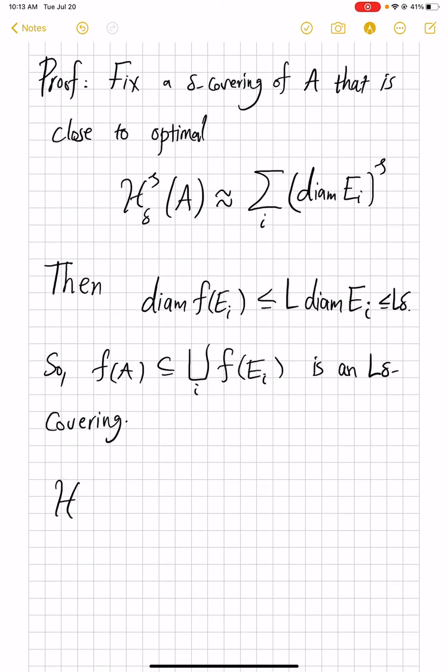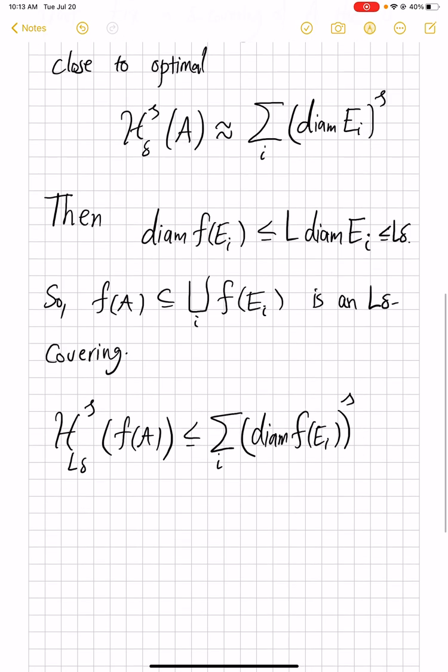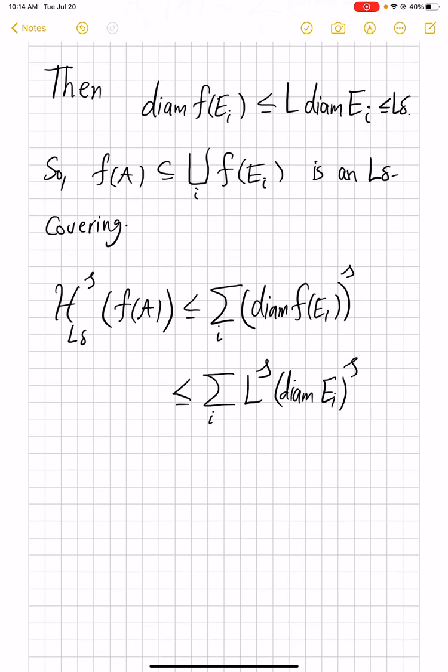Therefore, we can use it in the estimation of the L delta measure content of f(A). This will be less than, because this is infimum of all such summations, summation over i of diameter f(E_i) to power S. And then by the estimate on the diameter, this will be summation L to power S times diameter E_i to power S. We can take L^S outside.